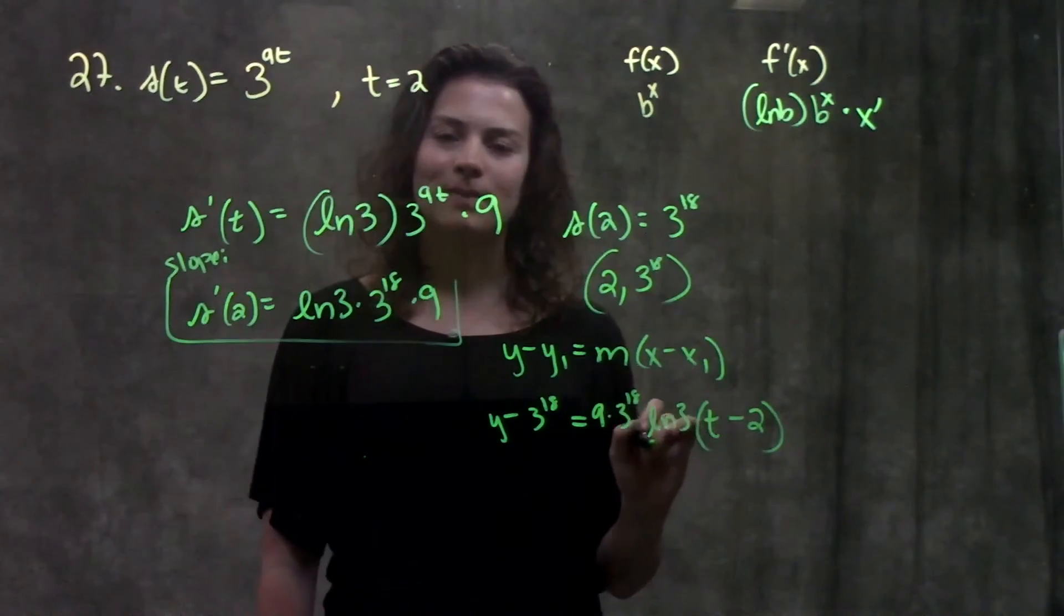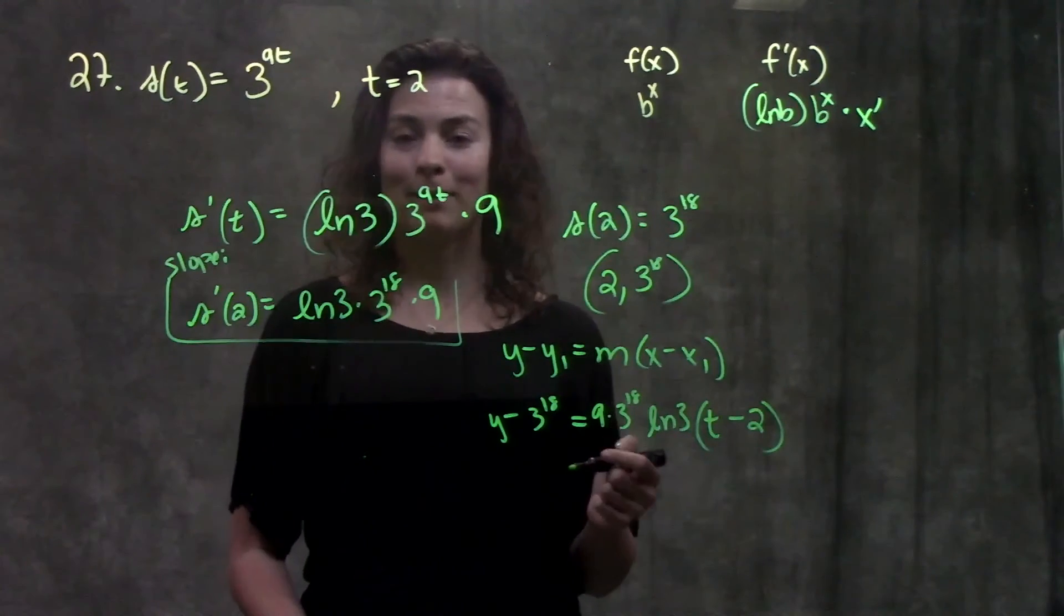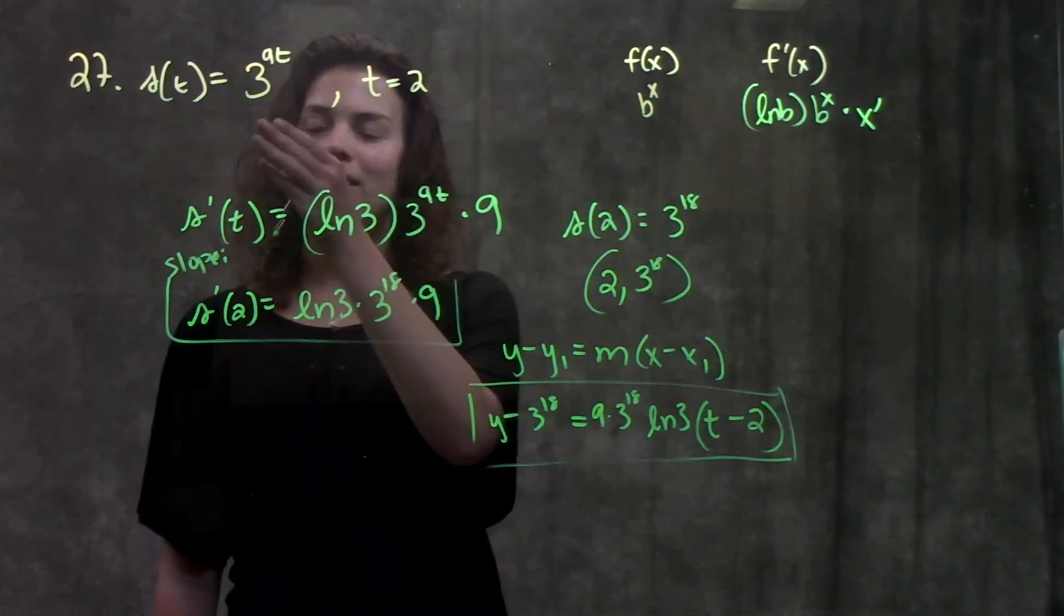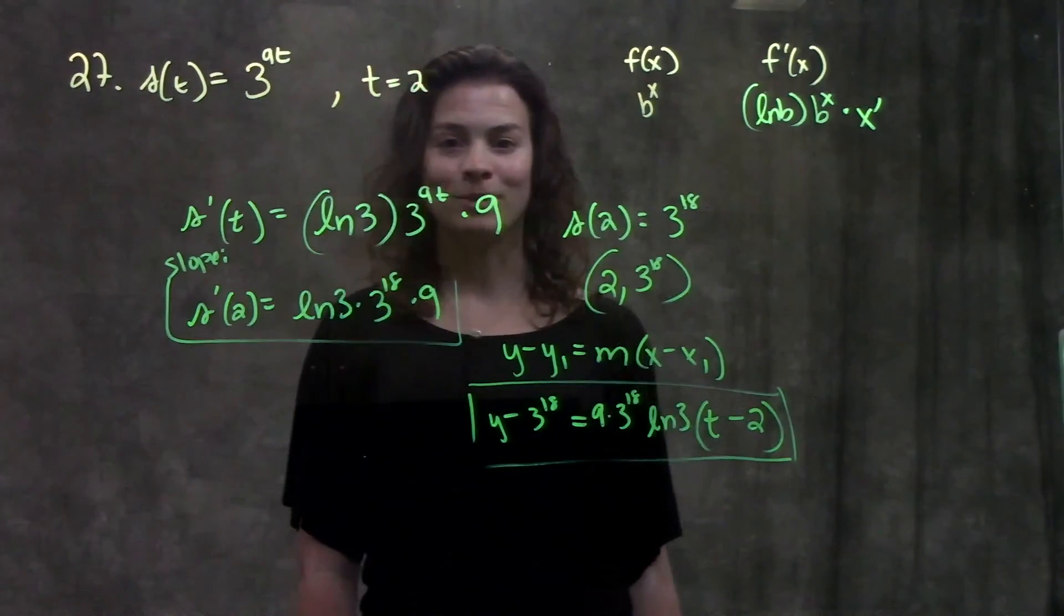You can go ahead and multiply things out, simplify it a little bit. I'm just going to leave it like this. This is the equation of your tangent line of this function at the value t equals 2.